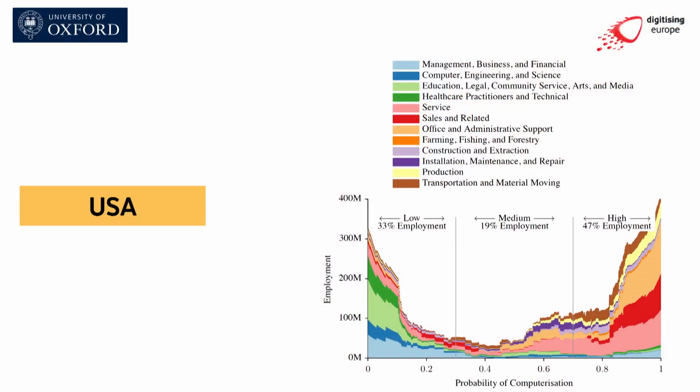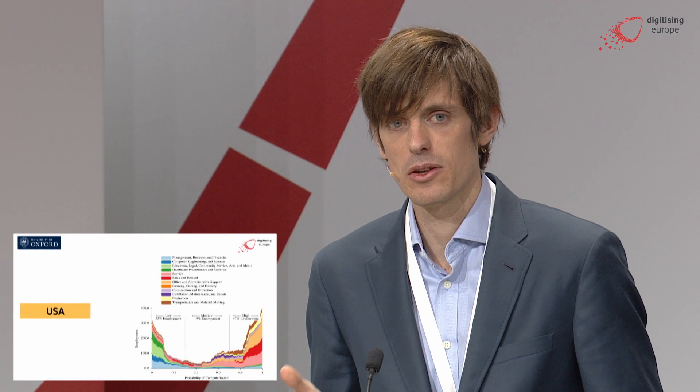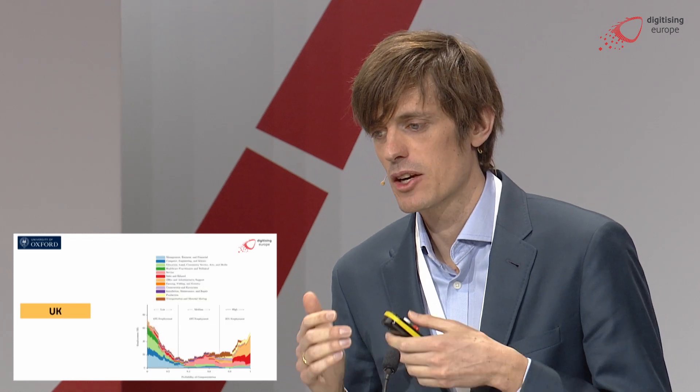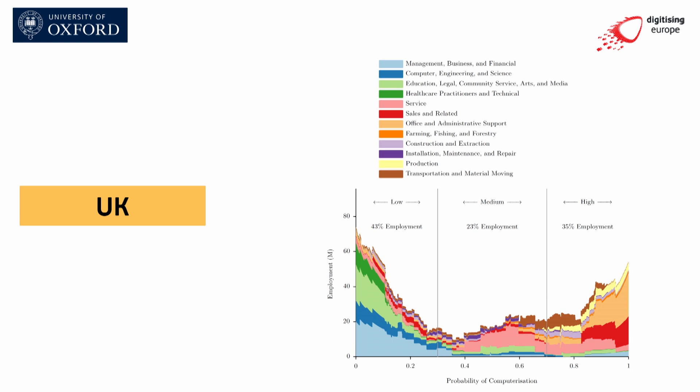The headline figure is that for the US we expect about 47% of current employment to be at higher risk of automation over the next 20 years. A recent follow-up study with Deloitte identified the equivalent figure for the UK to be about 35%. In either case, a really quite enormous number of jobs coming under threat as a result of these new technologies.